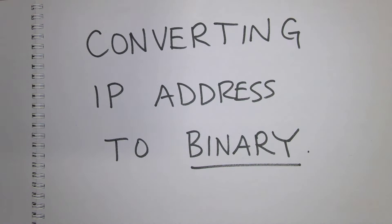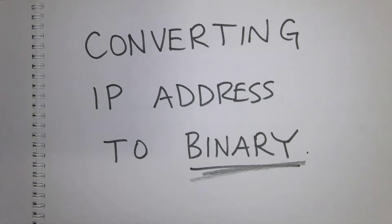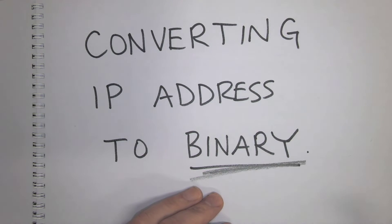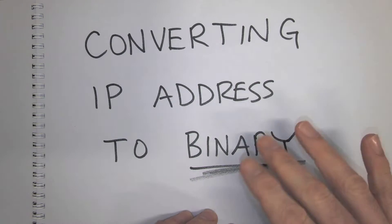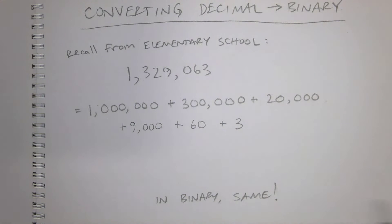One way of understanding IP addresses better is to recognize that they are actually binary numbers. We convert them to something other than binary just because we as humans don't understand ones and zeros as well as we understand other kinds of numbers. This is a quick video to show you how to convert an IP address to binary so that you can understand it better and do some interesting things with it.